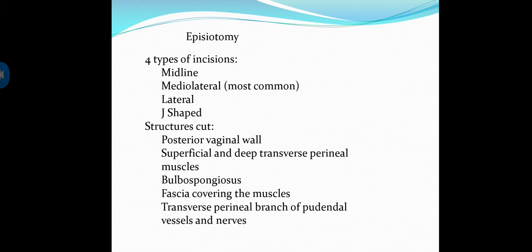Now, the structures cut during episiotomy: 1. Posterior vaginal wall. 2. Superficial and deep transverse perineal muscles. 3. Bulbospongiosus. 4. Fascia covering the muscles. 5. Transverse perineal branch of pudendal vessels and nerves. This covers episiotomy — 4 types and structures cut.